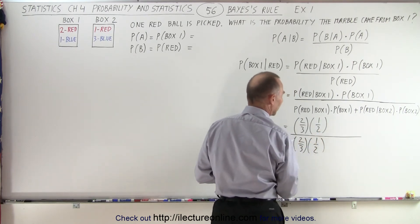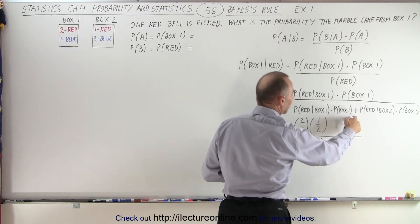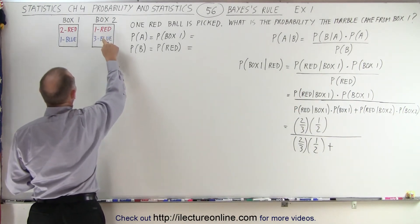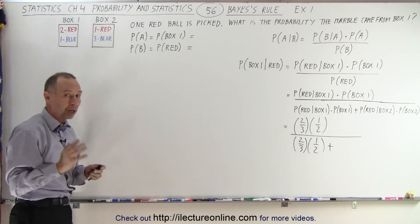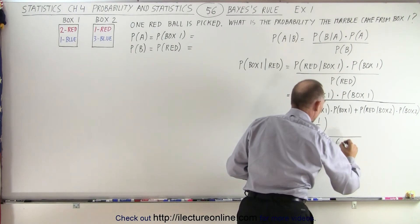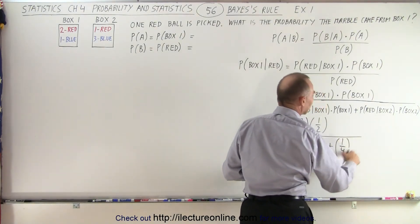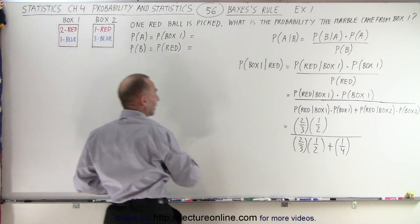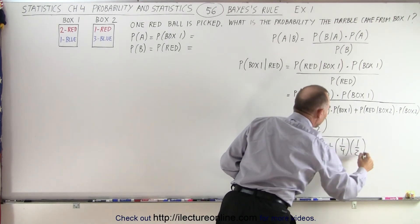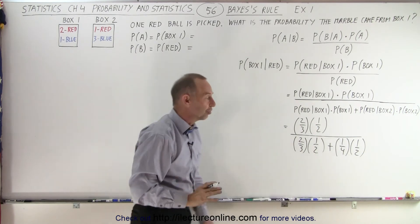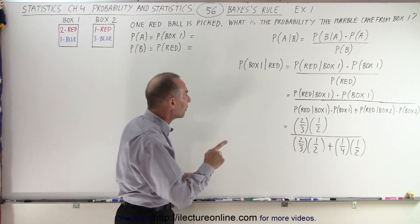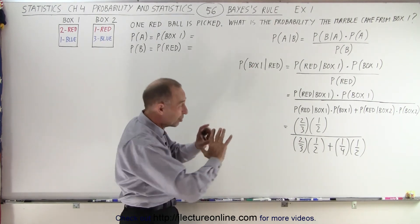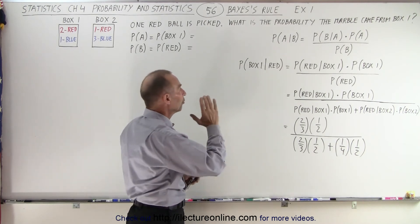Now we add to the denominator the probability of picking a red marble given that we picked box two. In box two we have one red marble and three blue marbles — that's one out of four marbles that is red, so the probability is one-fourth — times the probability of picking box two, which is also one-half since the two boxes have equal probability. Notice that without using this technique, it would be almost impossible to arrive at the right value.